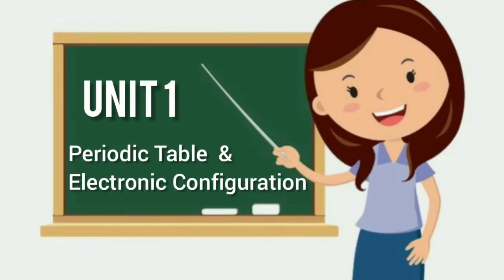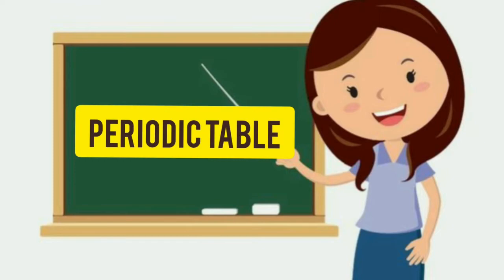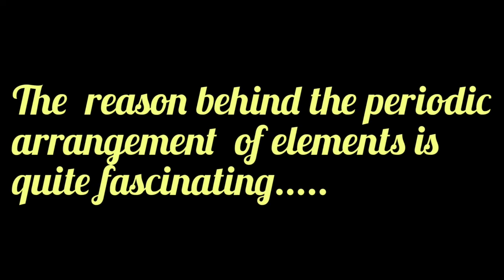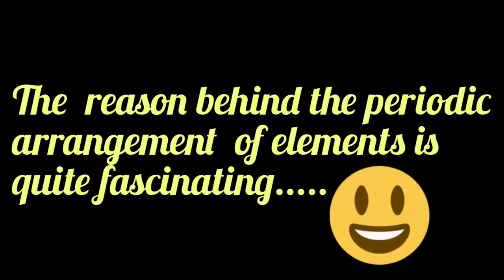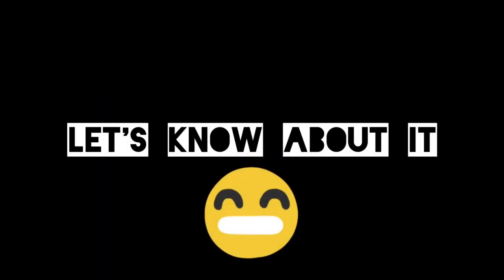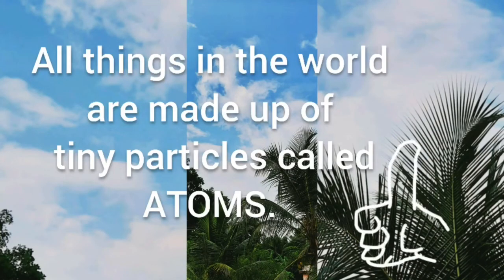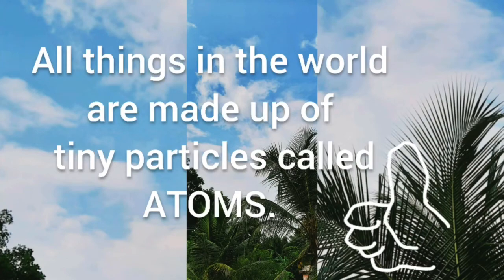Unit 1: Periodic Table and Electronic Configuration. What is a periodic table? Why do we arrange elements? Why do we call this arrangement periodic? The reason behind the periodic arrangement of elements is quite fascinating. Let's know about it. All things in the world are made up of tiny particles called atoms.